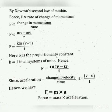Since M is common, take it out: M into V minus U by T. We already know change in velocity by time is equal to acceleration. So, instead of V minus U by T, substitute acceleration. Force is proportional to M into A. When we change the proportionality constant into equality, we introduce a constant K. So, F is equal to K into M into A, where K is the proportionality constant. If we take K value as 1, then F is equal to M into A.